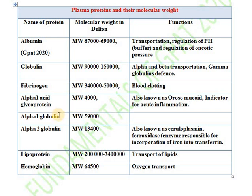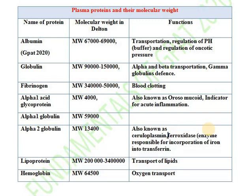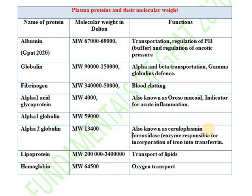Alpha-1 globulin has a molecular weight of 59,000 daltons. Alpha-2 globulin has a molecular weight of 134,000 daltons and is also known as ceruloplasmin or ceruloplasmin ferroxidase. Alpha-2 globulin or ceruloplasmin is responsible for the incorporation of iron into transferrin.